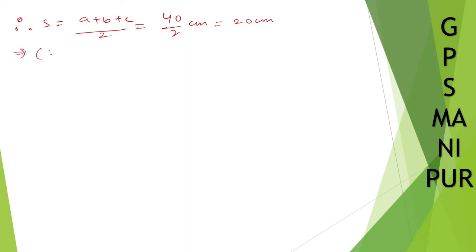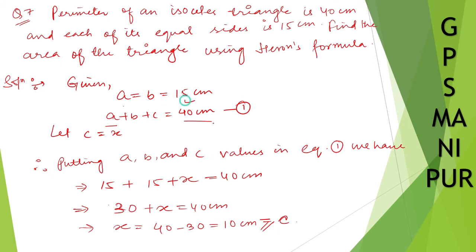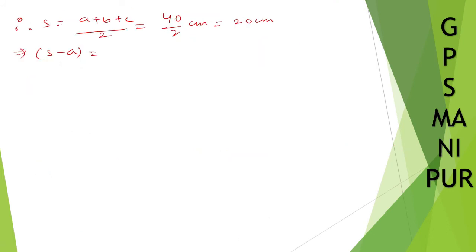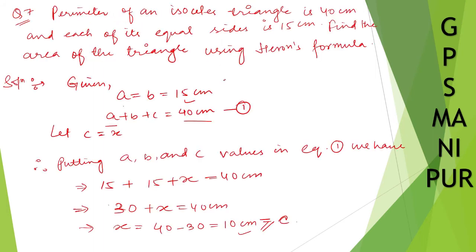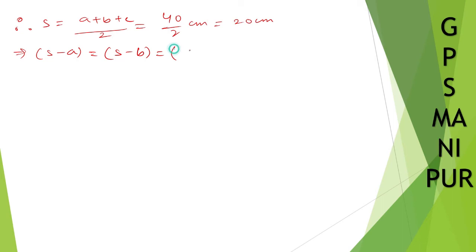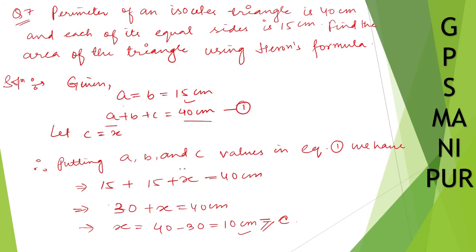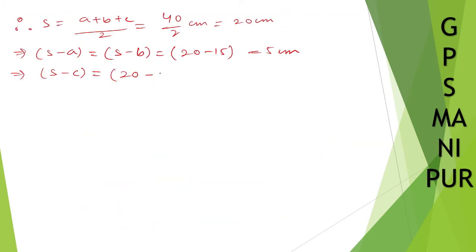Now let us find s minus a. The value of a and b is 15, and c is 10. So s minus a is equal to s minus b, which equals 20 minus 15, equal to 5 centimeters. Next, s minus c equals 20 minus c; c is 10 centimeters, so 20 minus 10 equals 10 centimeters.